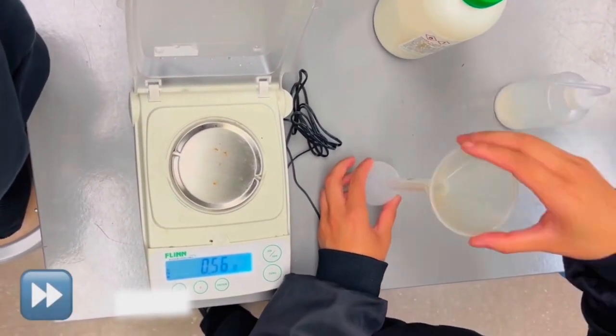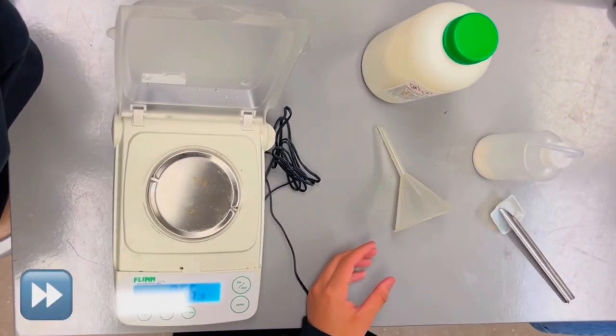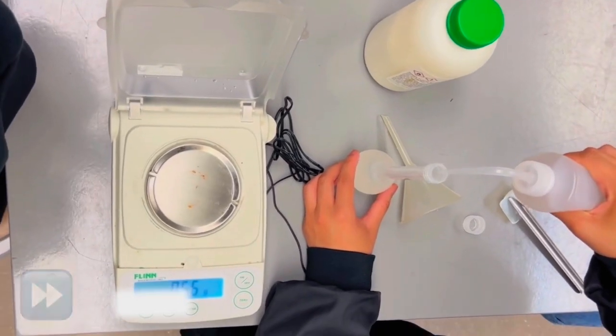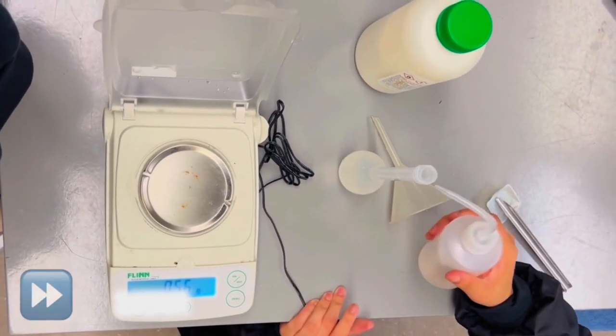If necessary, add water as you go. Once the solids are inside the volumetric flask, add some distilled water. Thoroughly mix the solution, then add more distilled water until the solution reaches the 100 milliliter line.